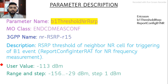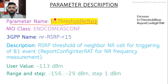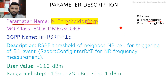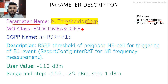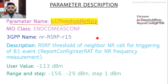To shift ENDC users to 4G, the parameter name is B1 Threshold NRRSRP. In Nokia this parameter is called B1 Threshold NRRSRP, and in Ericsson it is called B1 Threshold RSRP. By tuning this parameter we can move our traffic from 5G to 4G in the NSA case.